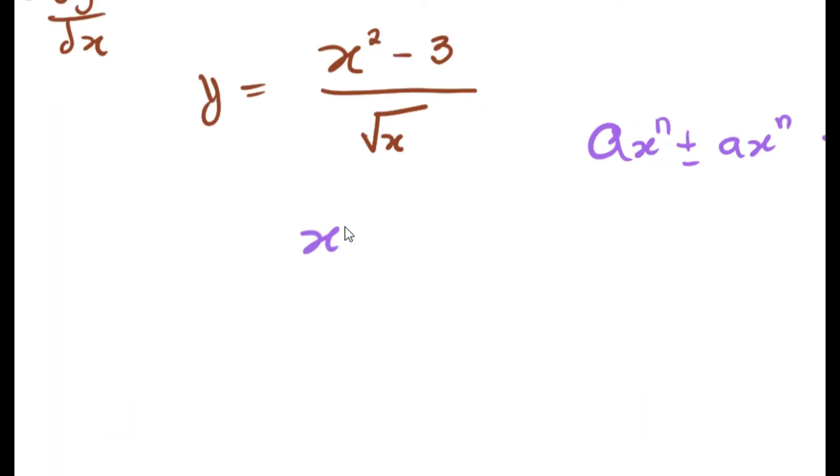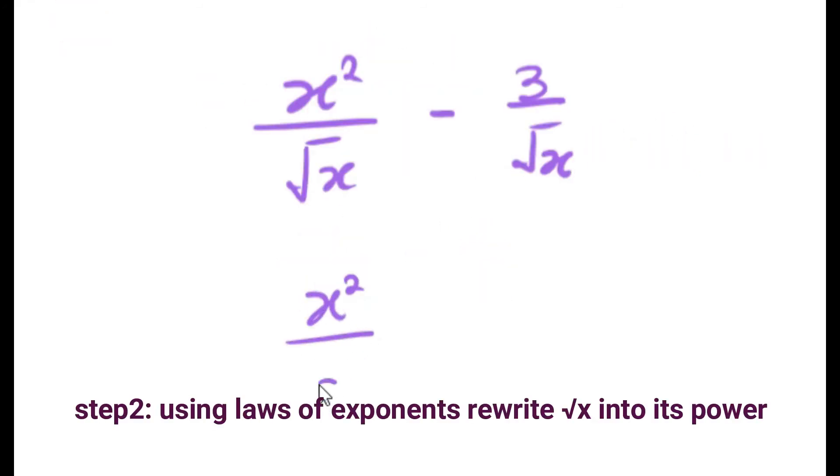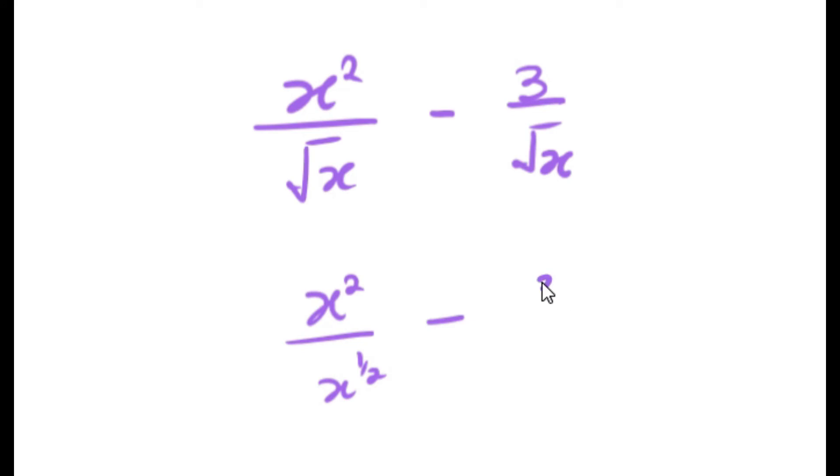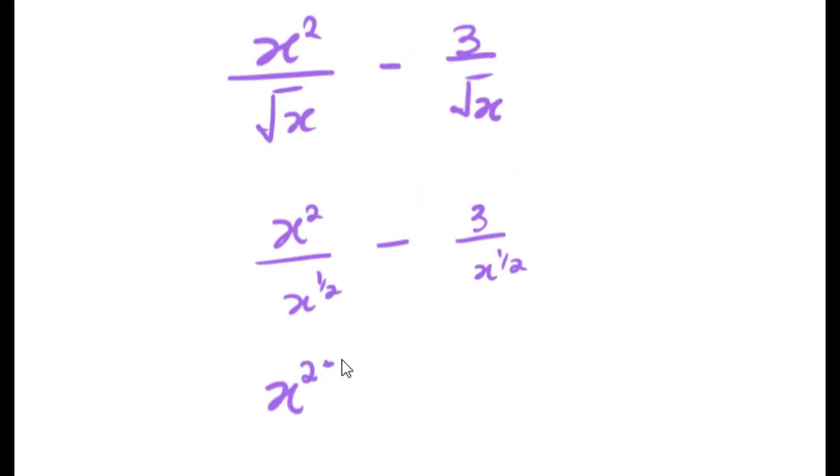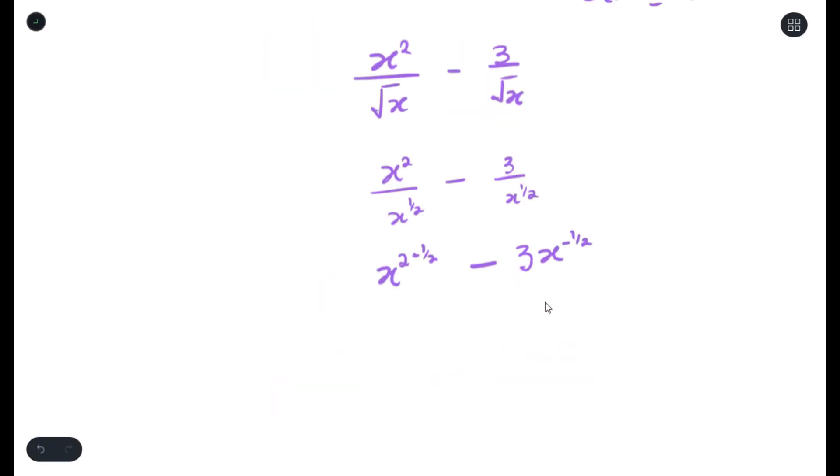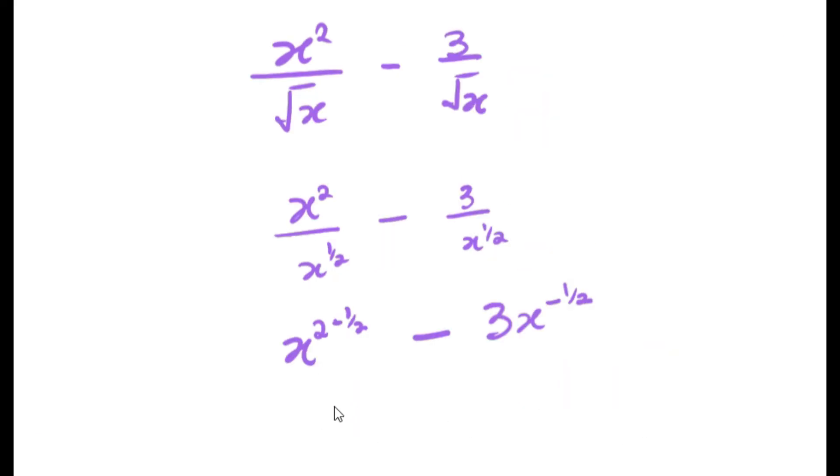Let us simplify it. First, we break the division sign. Then we change the roots into exponents. Then using the laws of exponents, we can subtract the first one here because they are divided. Whenever the bases are the same and there's a division sign, we subtract the exponent. For the other one, we bring the x up, it turns into negative, that's why you have negative half.